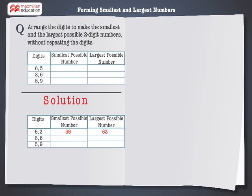Let's solve the next problem. Here we have the digits 8 and 6. 6 is smaller than 8. To form the smallest number with 8 and 6, put the smaller digit in the tens place. So, the smallest number formed with the digits 8 and 6 is 68.